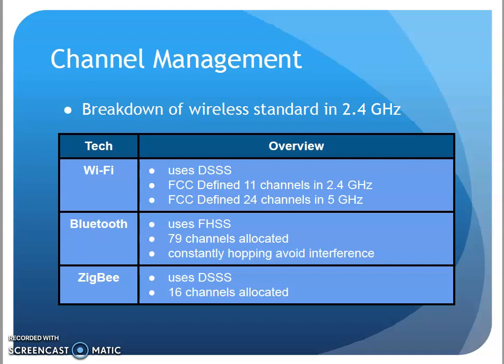The book shows which technologies tend to use each approach. Wi-Fi tends to use direct sequence spread spectrum or variations of it. Bluetooth tends to use frequency hopping spread spectrum. ZigBee tends to use direct sequence spread spectrum. These are examples of different technologies using these approaches in the 2.4 gigahertz band.